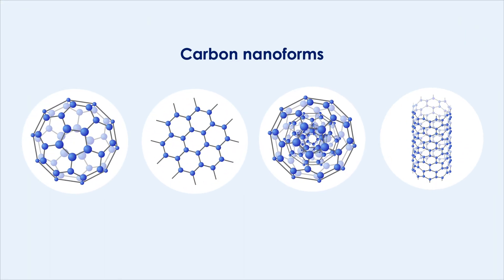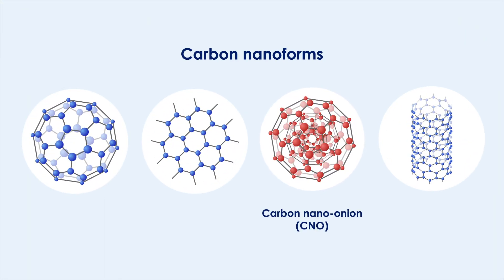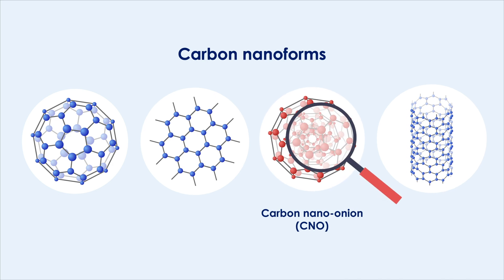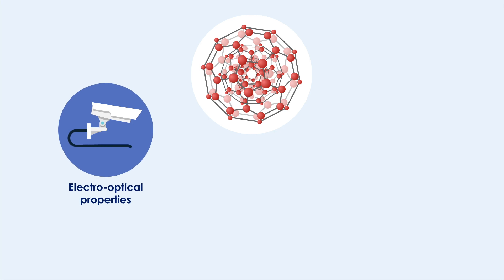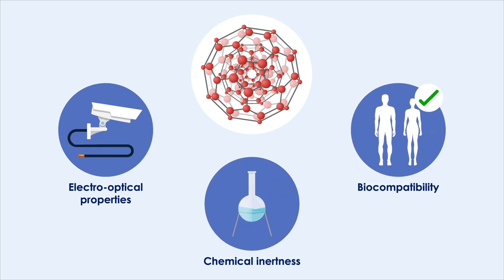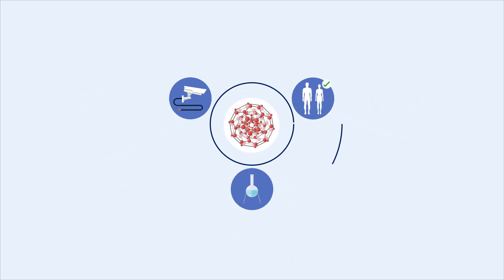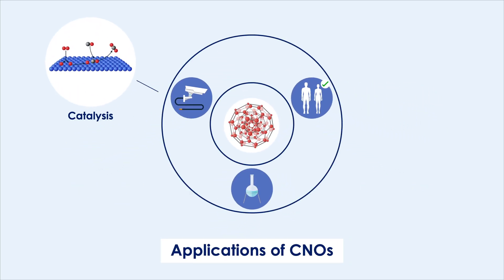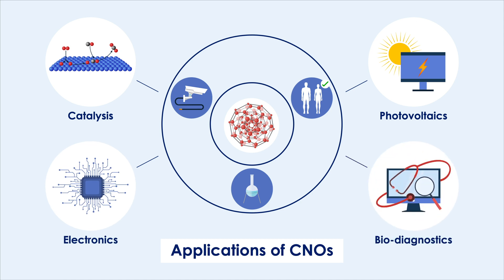A unique nanoform of carbon, the Carbon Nano Onion (CNO), has recently gained attention owing to its promising electro-optical properties, chemical inertness, and biocompatibility. These make CNOs ideal for use in catalysis, photovoltaics, electronics, and biodiagnostic applications.